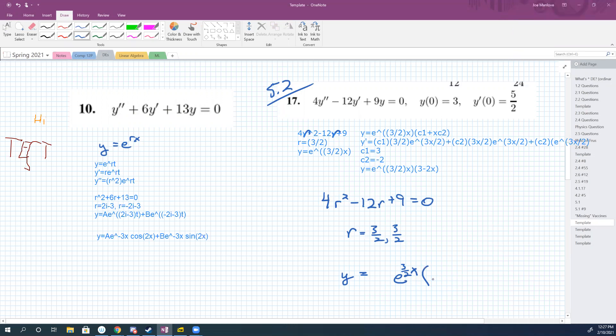You got y is what, e to the three halves x, and then what did you do with your constants? How did I find them? I mean what did you do with them? What was the rest of your y? Was it just my completed y or just for like my incomplete, like c1 plus x c2?